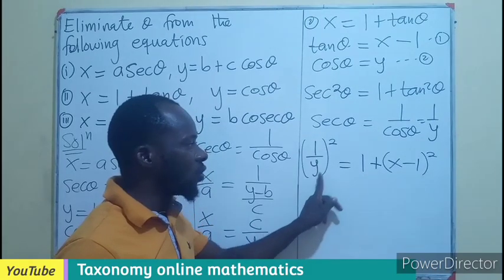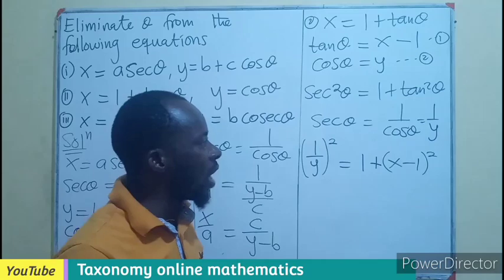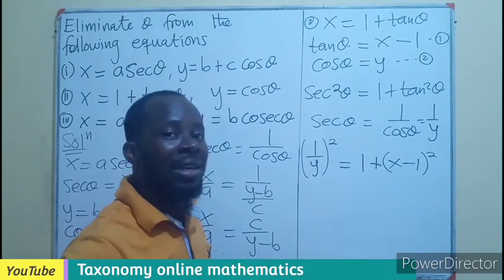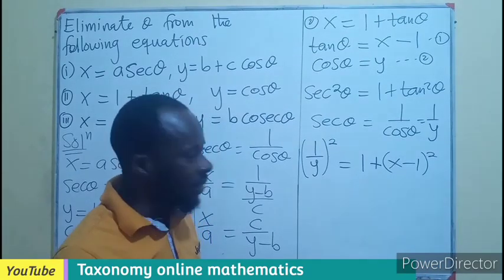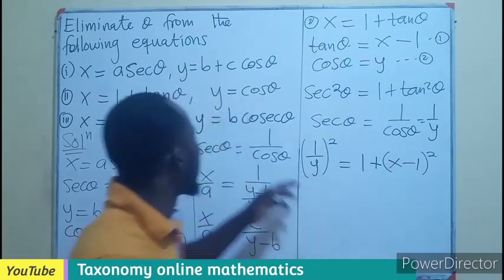I can also try to simplify it to any other version. This could be 1 over Y square equals this. If you expand, you will still have to have your answer. But the goal is that the theta is eliminated. So this becomes the final expression for this.